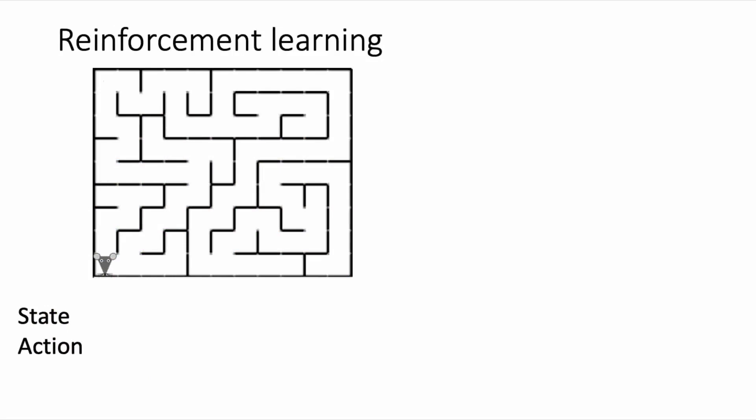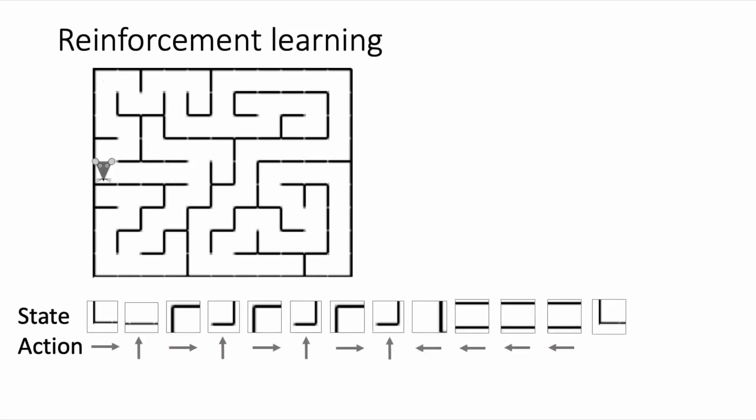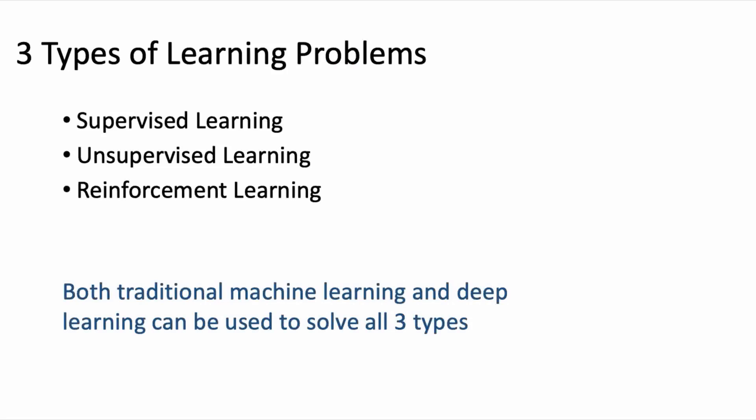Reinforcement learning is the third type of learning problem, where we model an agent that's making choices in response to a changing environment. The agent receives positive and negative feedback in response to its choices, but this feedback is infrequent and delayed. The goal of the reinforcement learning model is to find a policy for choosing actions that maximizes the total reward for the agent. The best action will depend on the current state of the agent. Both traditional machine learning and deep learning can be used for all three types of learning problems.